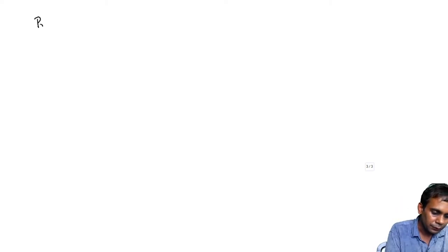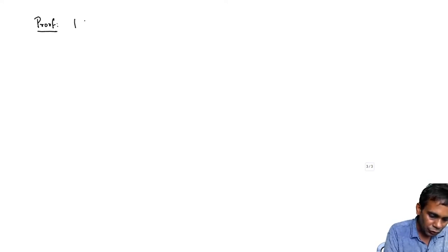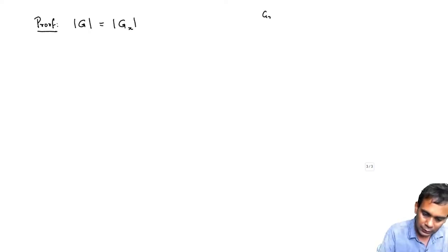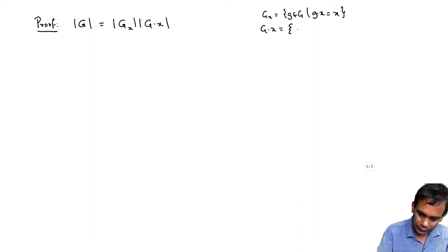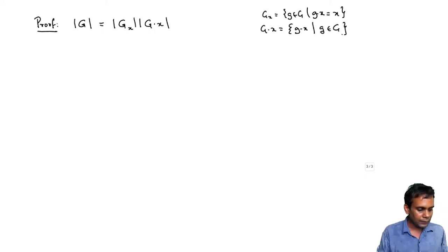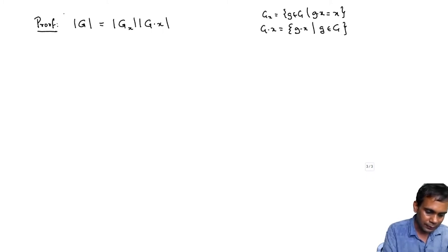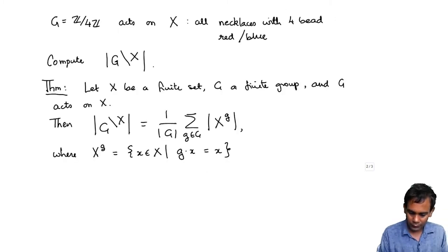For the proof, recall that the size of G equals the size of the stabilizer G_x times the size of the orbit of x, where G·x is the set {g·x : g in G}. We proved this in one of the earlier lectures, and I will be using this. Let us start with the right-hand side of the theorem.